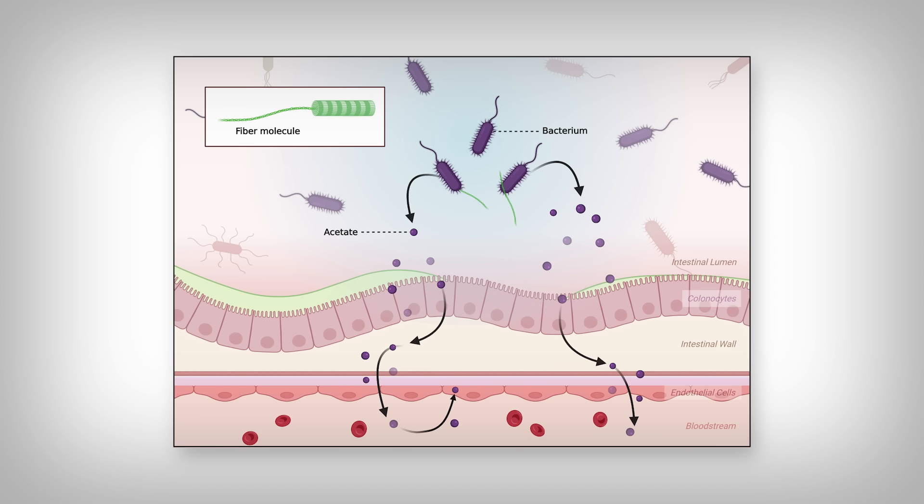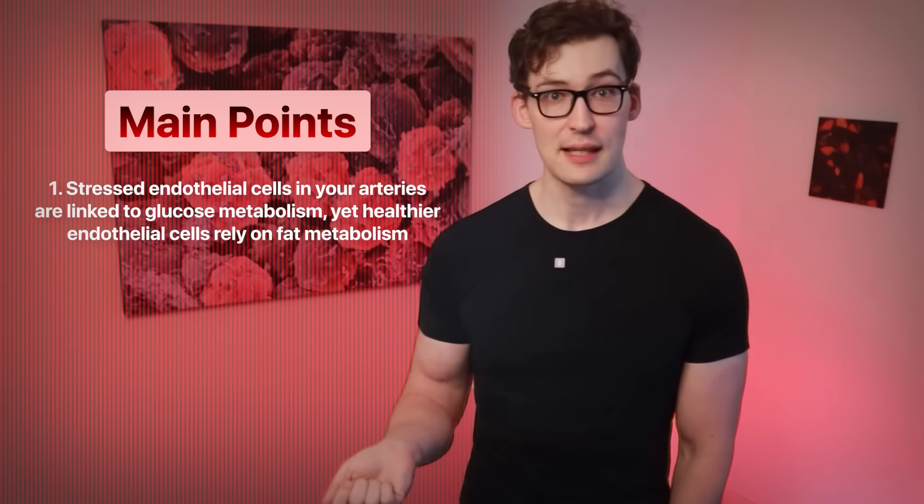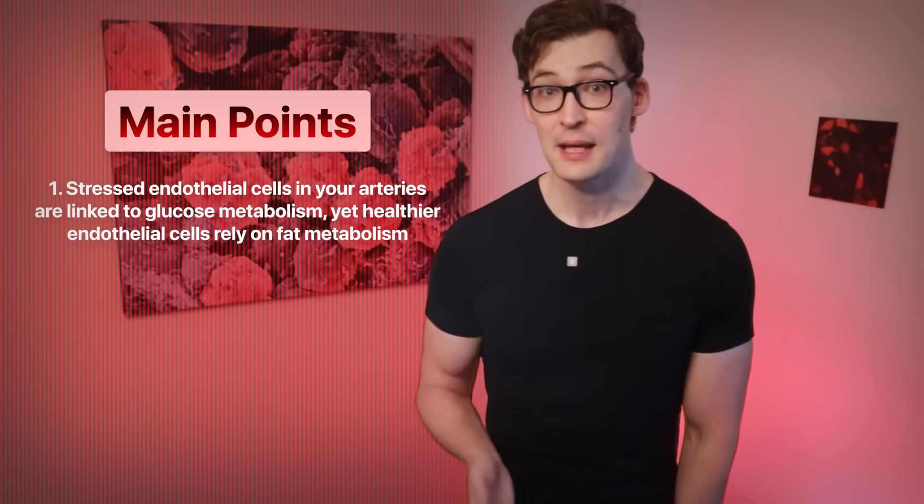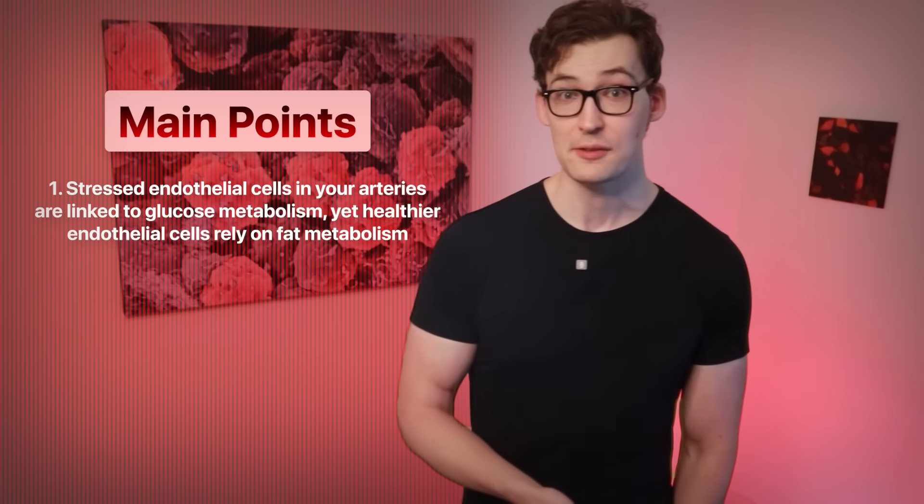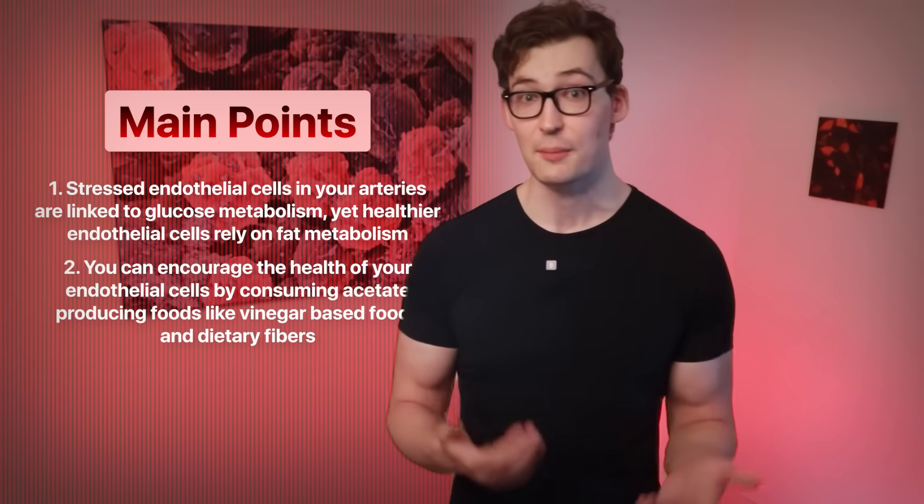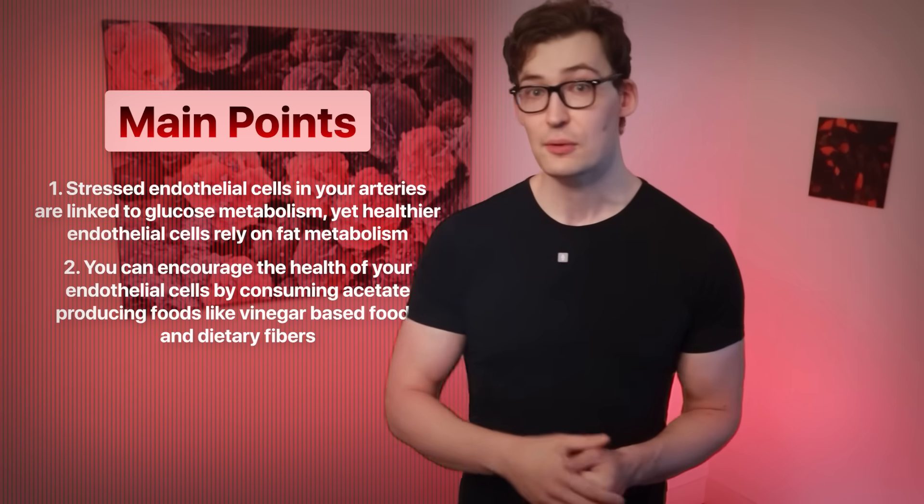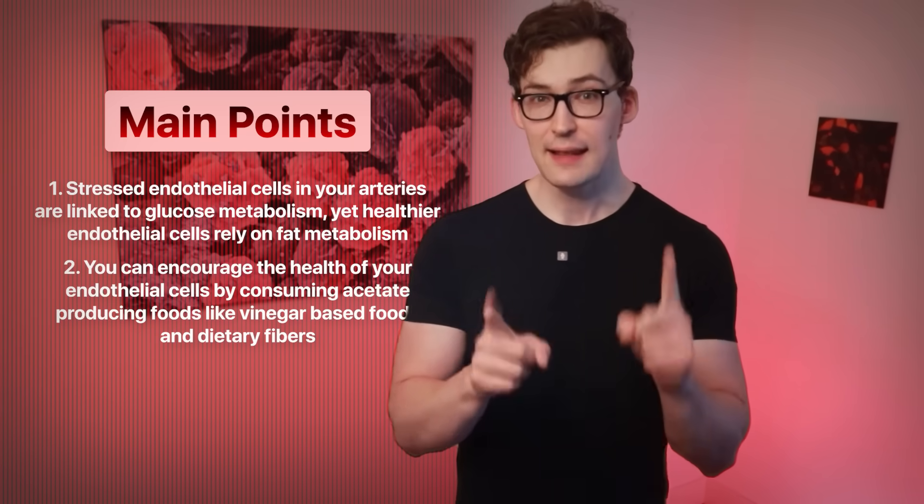And another big one is dietary fiber sources like legumes, artichokes, leeks, whole grains, and anything of that ilk. These resistant fibers are taken up by bacteria and converted to acetate, which is then absorbed by your colonocytes in the intestinal wall, which pours them into the bloodstream. And guess what's waiting there to suck that acetate into their receptive mitochondria? That's right, your endothelial cells. So, all that to explain an incredibly dynamic nature of your endothelial cell health through metabolism. Stressed endothelial cells tend to be linked to glycolysis of glucose metabolism, and healthier quiescent cells rely on fat metabolism. You can support that fat metabolism through consuming acetate encouraging foods like vinegar-based foods, fermented foods, and dietary fibers. Speaking to that last one, I actually go over more on fibers and their impact on your health. Allow me to fascinate you right here too. I'll speak with you over there. Thanks for tuning in.